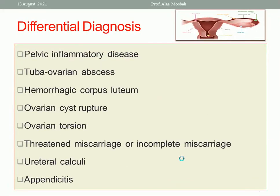The differential diagnosis of ectopic pregnancy includes pelvic inflammatory disease, tubo-ovarian abscess, hemorrhagic corpus luteum, ovarian torsion, threatened or complete miscarriage, appendicitis, and ureteric calculi.